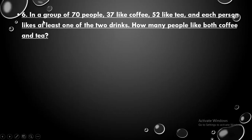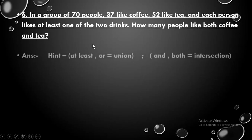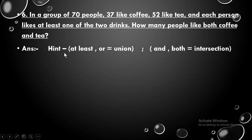The sixth question: in a group of 70 people — and when you see the word 'group,' automatically that means union, so your union is 70 — 37 like coffee, 52 like tea, and each person likes at least one of the two drinks. How many people like both coffee and tea? A hint: whenever they say 'at least' or 'or,' it means union; whenever they say 'and' or 'both,' it means intersection.